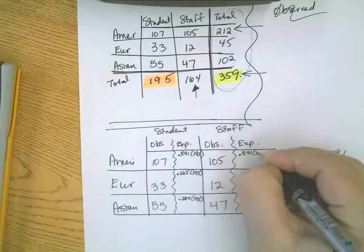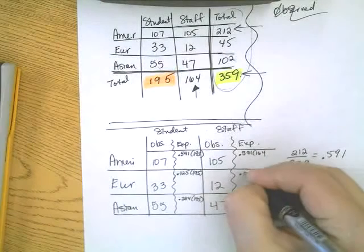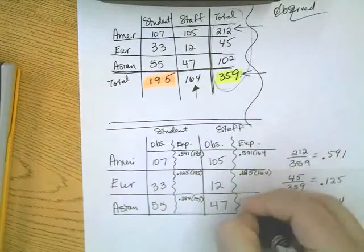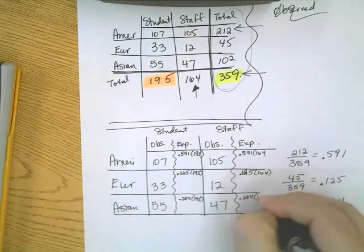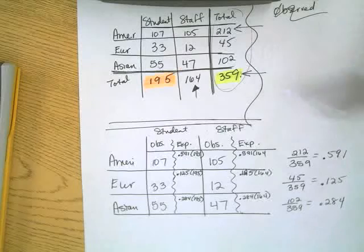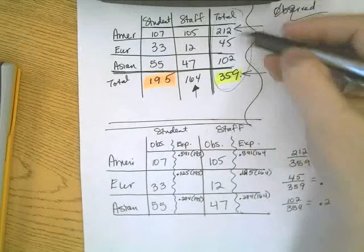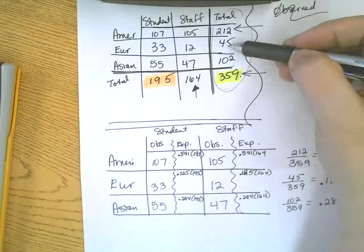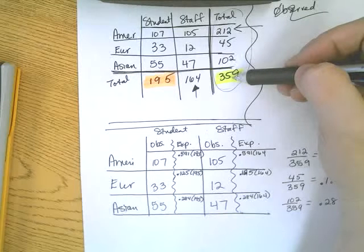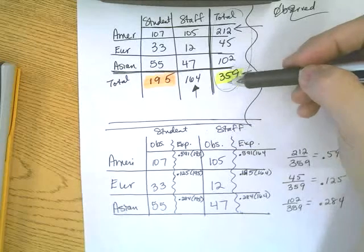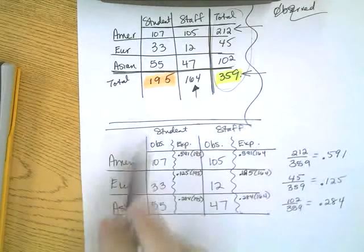For example, 0.125 times 164 and 0.284 times 164 give the staff expected counts. The process is: find the breakdown of car types to get the expected percent, then multiply by the actual group size — 195 for students and 164 for staff — to get the expected counts.